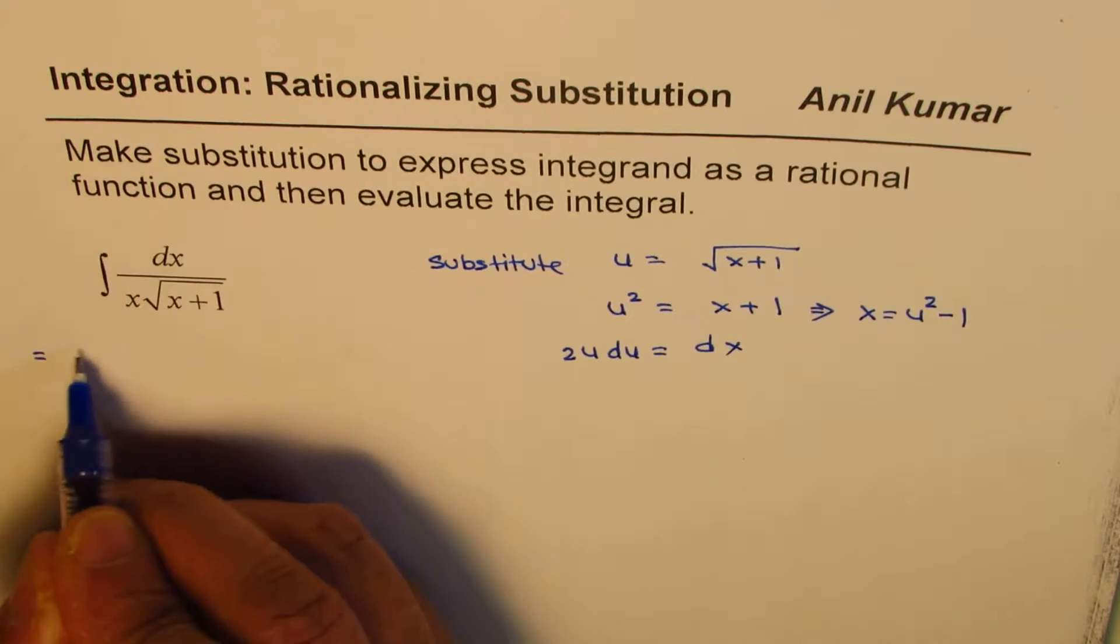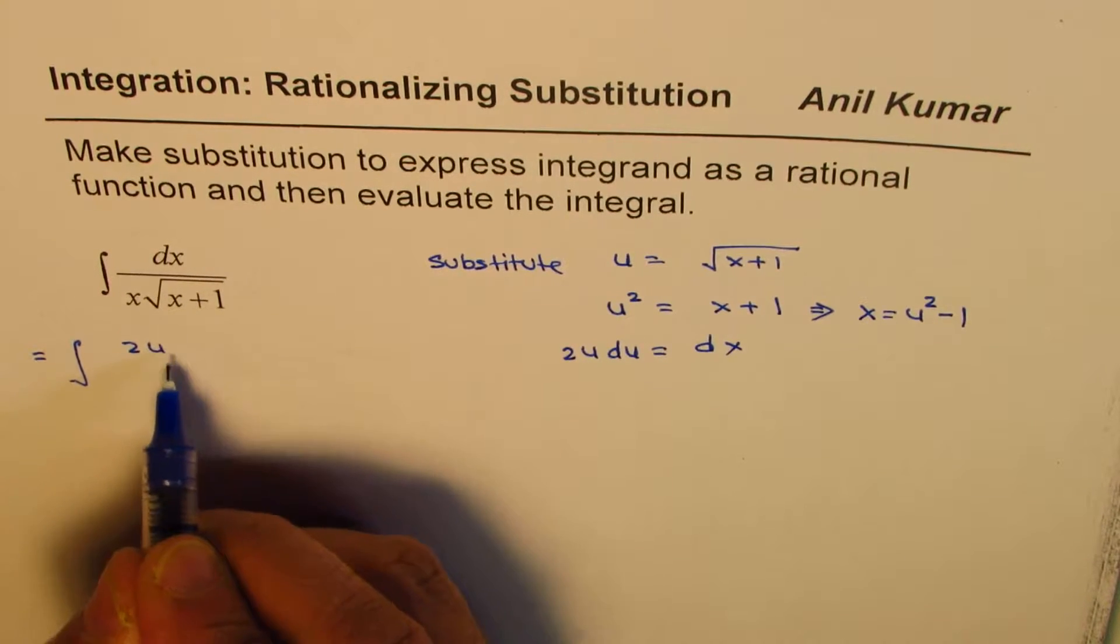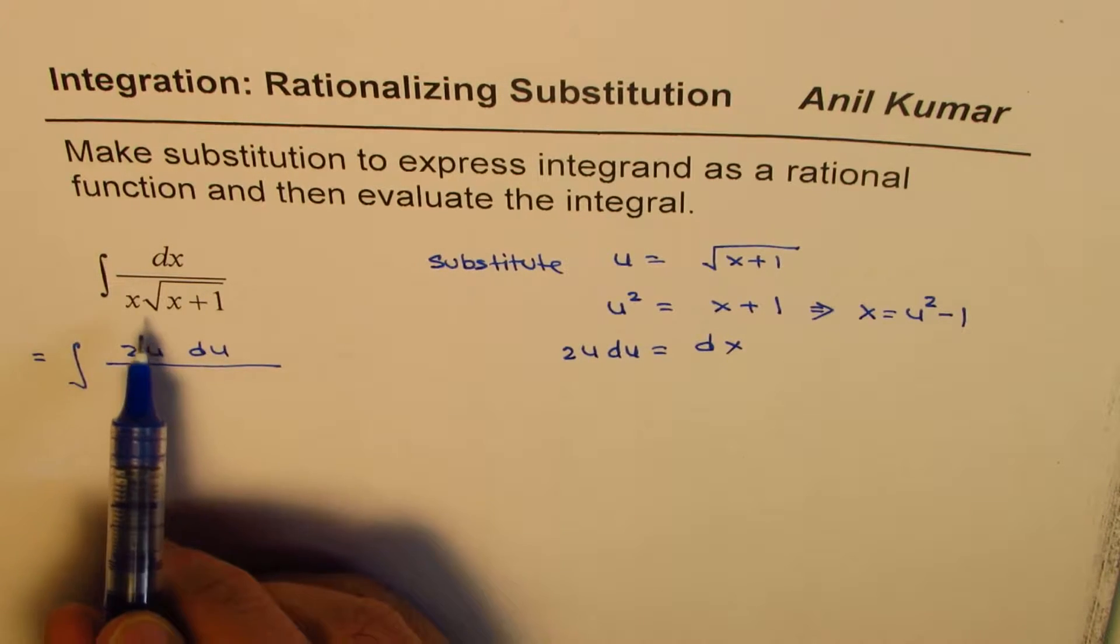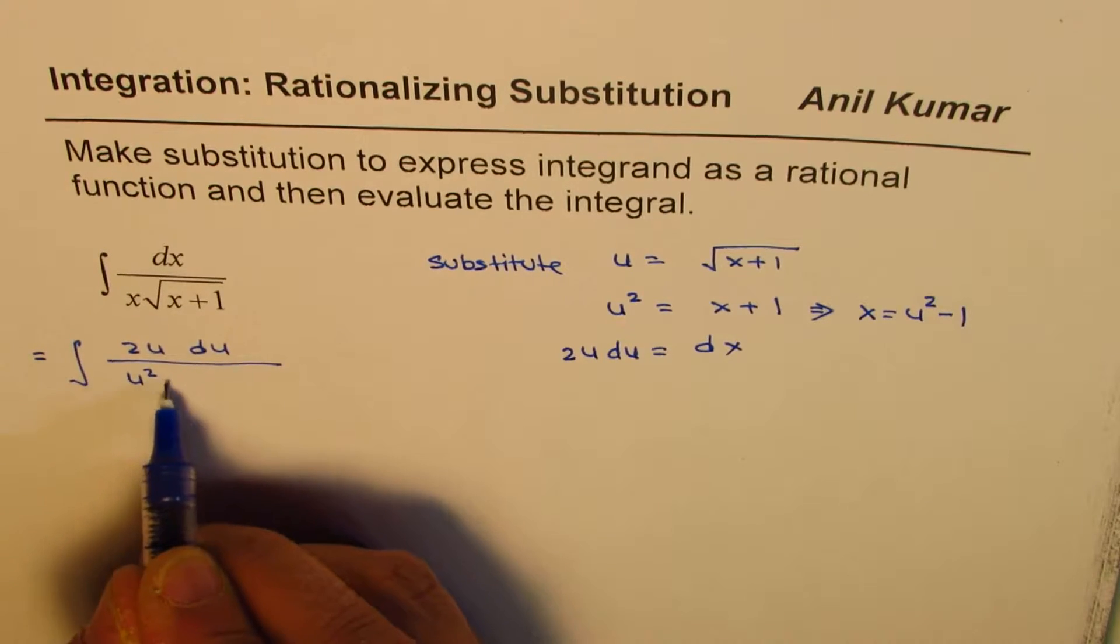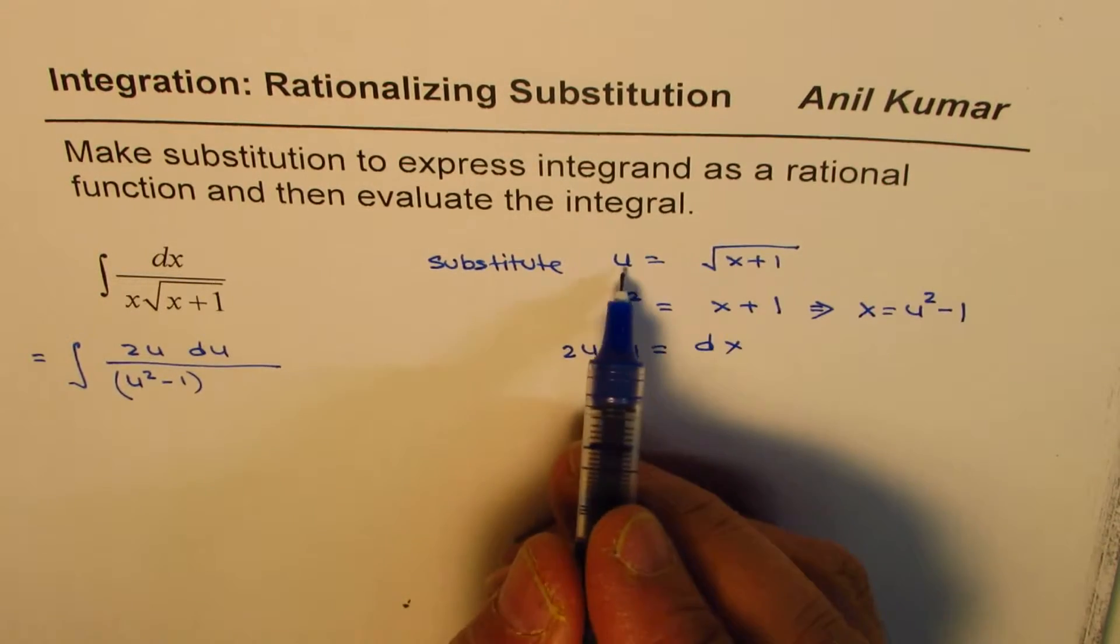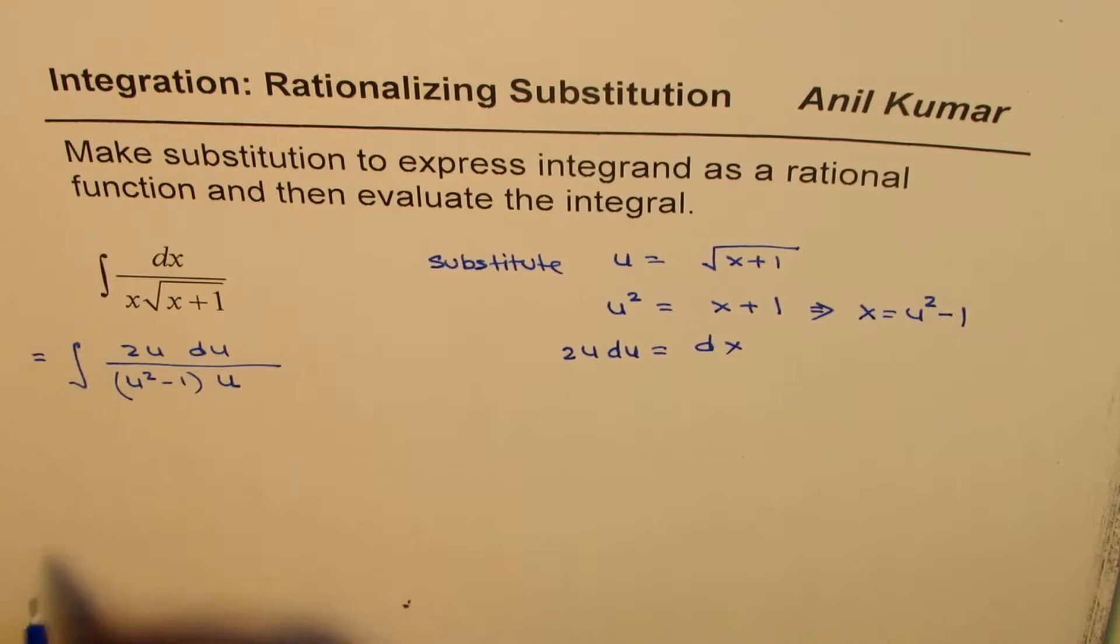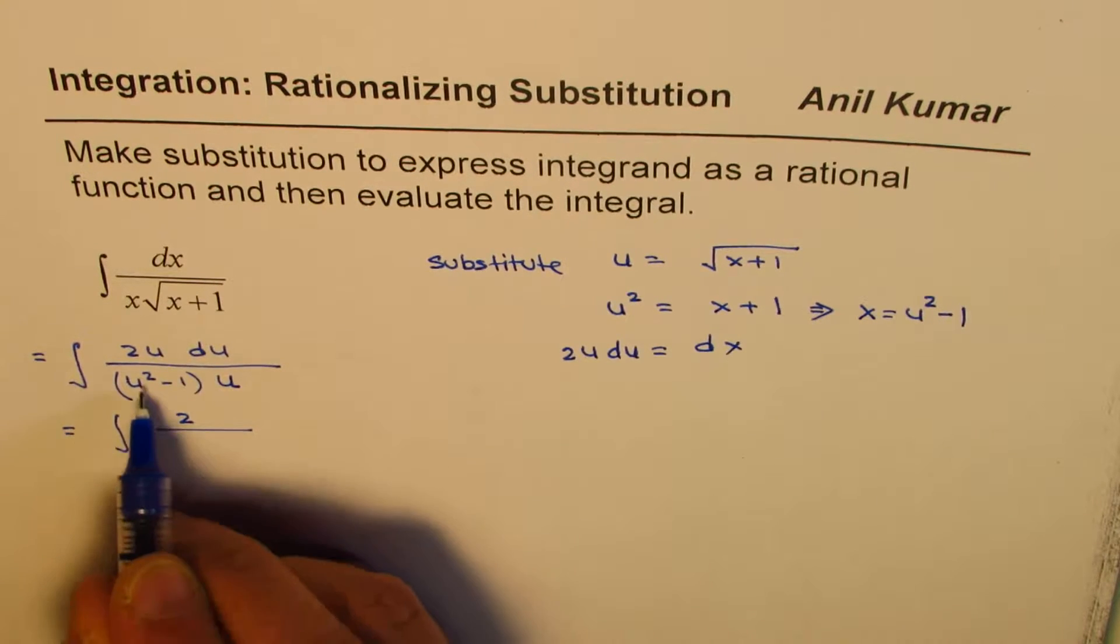So we could write our integral here as, dx is 2u du and the denominator here is we have x which could be written as u square minus 1 and then square root of x plus 1 is u so we get this part. u and u cancel.